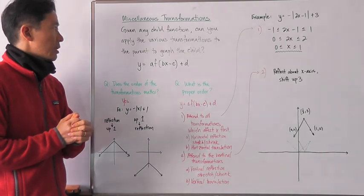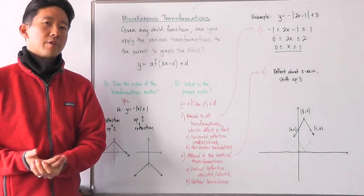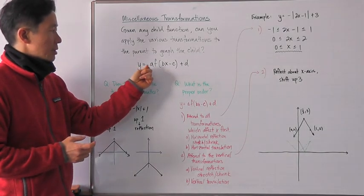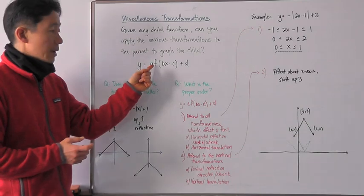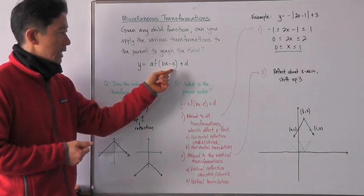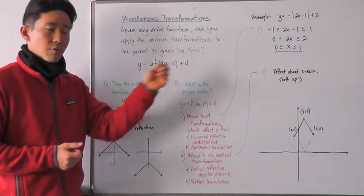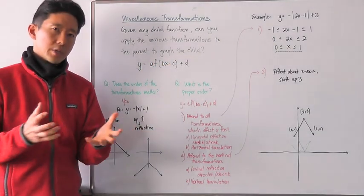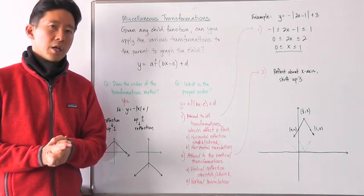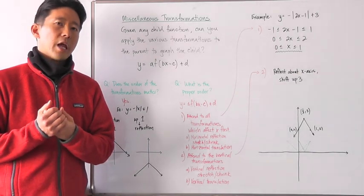Given any child function, can you apply the various transformations to the parent to be able to graph the child? Remember we said that the family of functions is going to look like this: y is equal to a times the parent function f of x, then bx minus c, plus d. So notice we have four different transformations. What if we take those transformations in combination to a particular parent function? Will we be able to go ahead and graph the child function accurately?